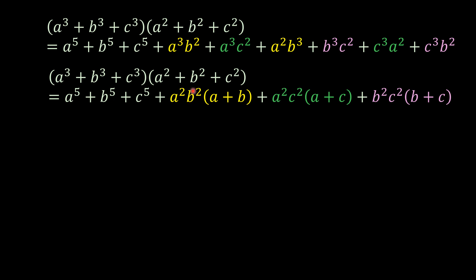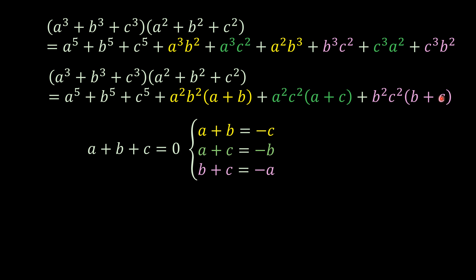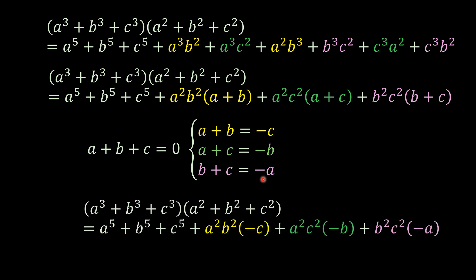So here we're going to have a squared plus b squared which multiplies a plus b, and then doing the same thing for the rest of the other terms. And then it's given that a plus b plus c is equal to 0. And from here we have these equations: a plus b equals negative c, a plus c equals negative b, and b plus c equals negative a. So now we're going to replace in the equation above and then we're going to have this one.